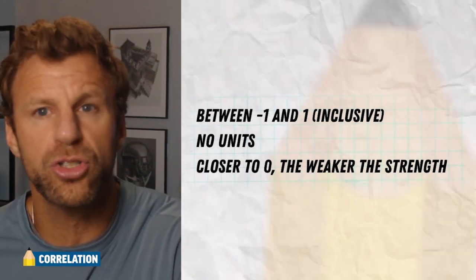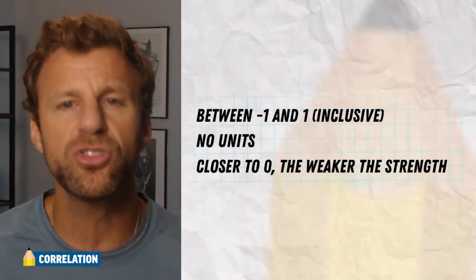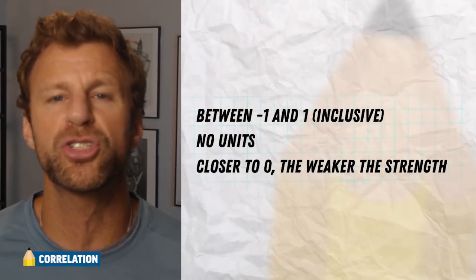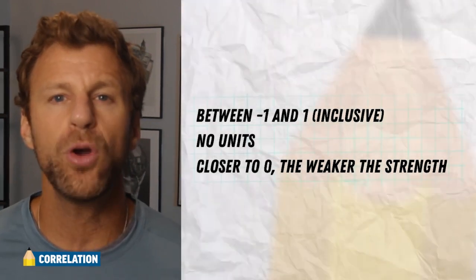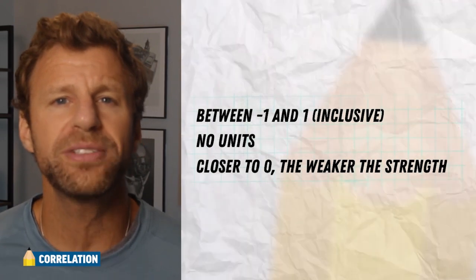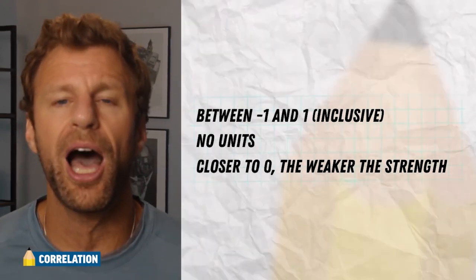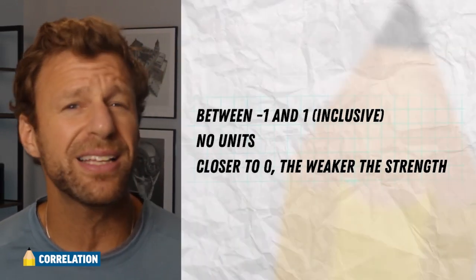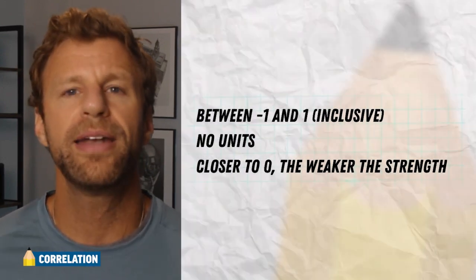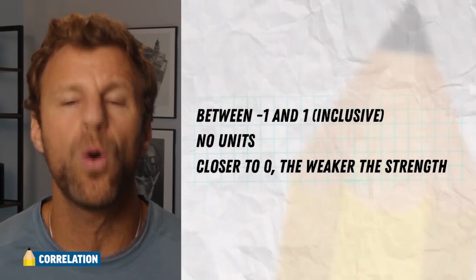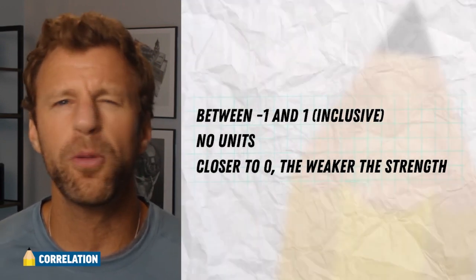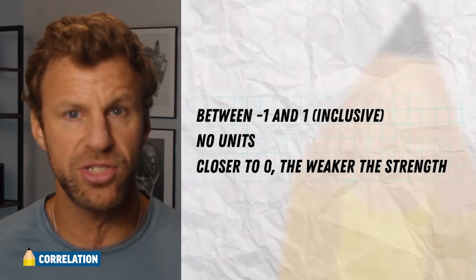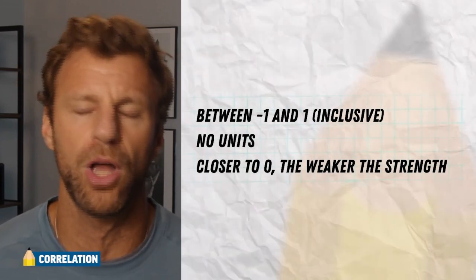Anything closer to one or closer to negative one is actually stronger. So the closer we get to a value of one, the stronger the relationship in a positive direction. The closer we get to negative one, the stronger the relationship in a negative direction. If your data is, which again is very unlikely in the real world, but if your data is a perfect straight line that is going up, it would have a correlation of one. If it's a perfect straight line that's going down, it'd have a correlation of negative one. But for anything that has a little bit of scatter to it, it's going to be somewhere in between negative one and one. Now, the closer the correlation value gets to zero, the weaker the relationship is. Anything from negative 0.5 to positive 0.5 is probably on the weaker side. We like to see strength or using that word strong when we are above positive 0.5 or below negative 0.5.